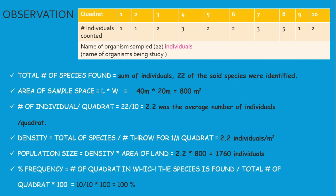Percentage frequency equals the number of quadrats in which the species is found, divided by the total number of quadrats, multiplied by 100. Here we found the organism in all the throws, so it would be 10 out of 10 multiplied by 100. This means we have 100% frequency for the area studied.